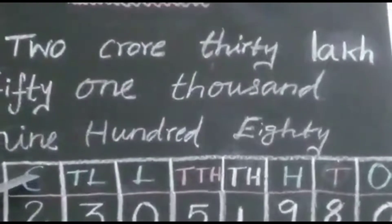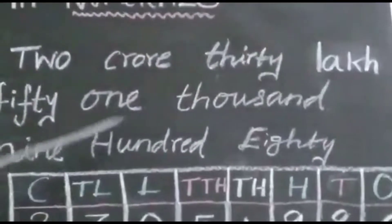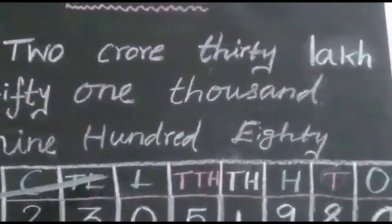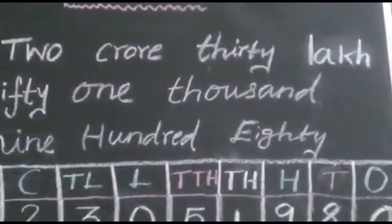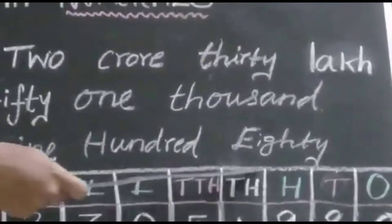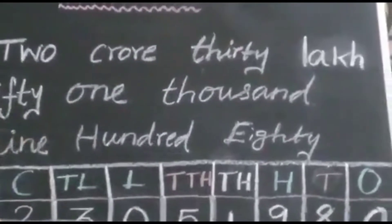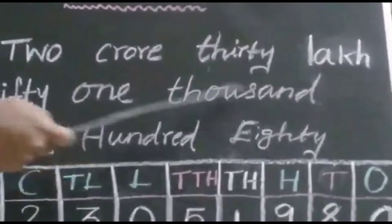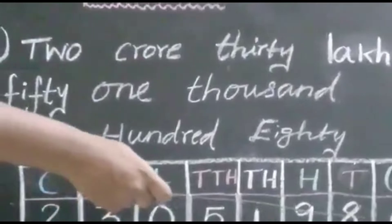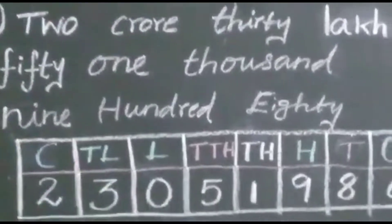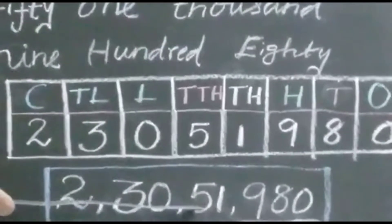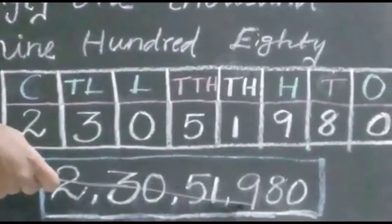2 crore is given, so in the crore place write 2. 30 lakhs is given, so in the lakhs place write 30. 51,000 is in the thousands place, so write 51 here. Next, 980 — write 980 here. So the answer is 2,30,51,980.